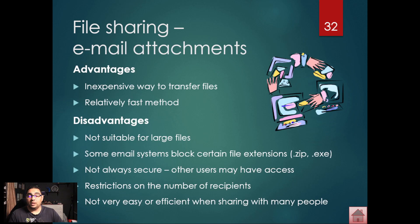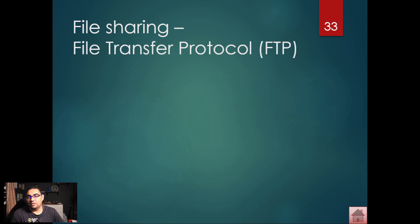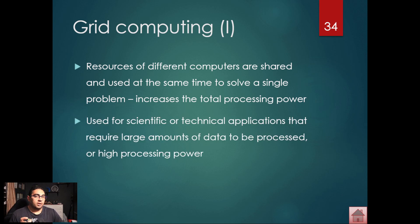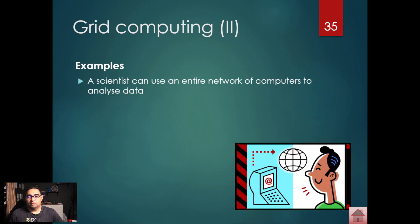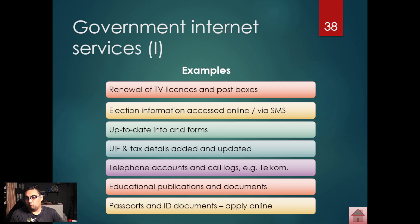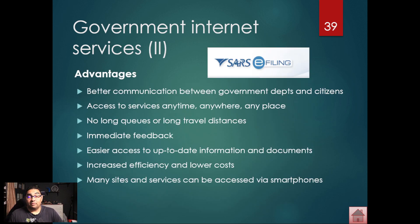With email specifically, there's a file size limit of around five or six megabytes, which is not a lot. That's why we talk about compression software — you compress the files so they can go through. With emails you're also restricted on the number of recipients. Know FTP — File Transfer Protocol — and FTP servers. For grid computing, just know the definition and an example, and you'll be fine.